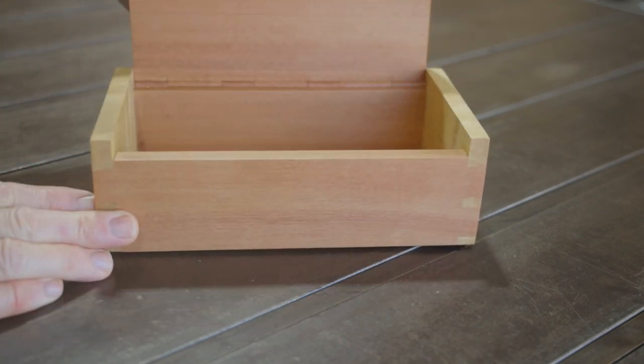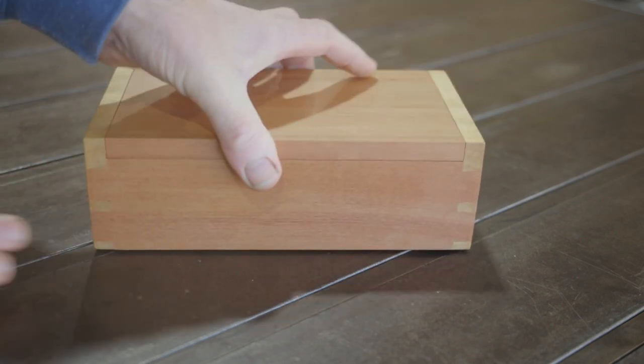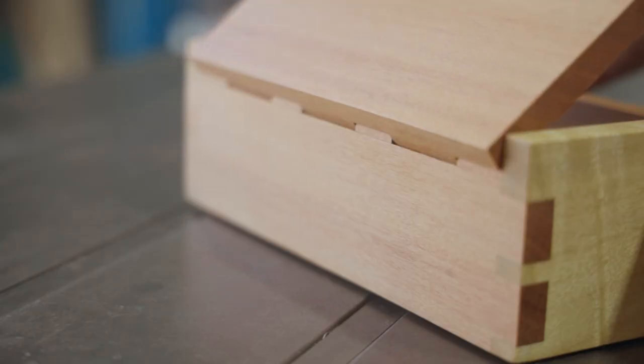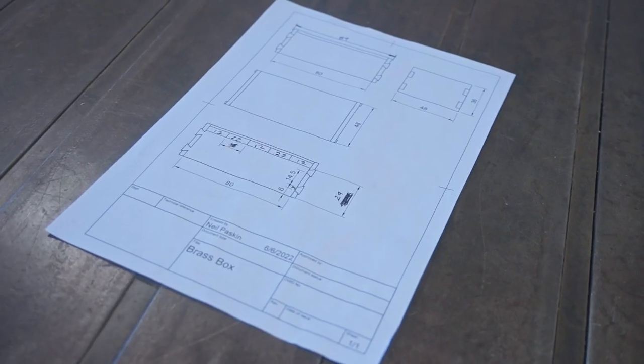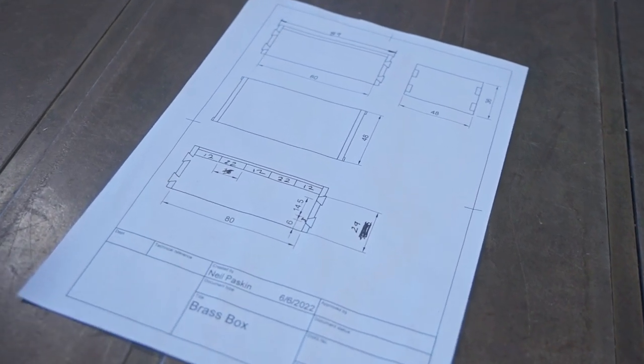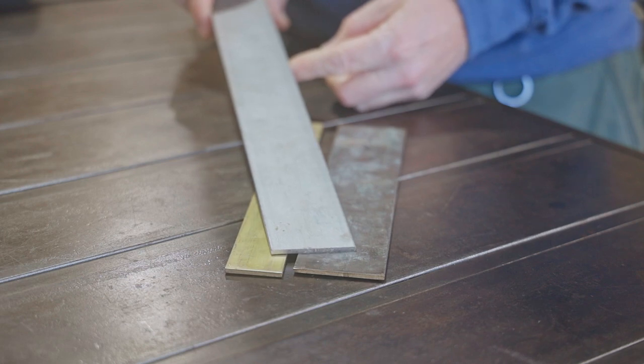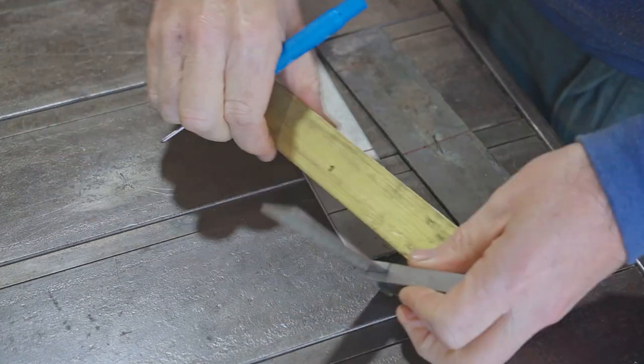Some of you may remember this wooden box that I made a while ago. It has a hidden hinge and since I made it I've been thinking about remaking it but out of brass. I've worked out the dimensions and as well as using brass I'll also use some stainless steel for the ends of the box and that will give the joints that hold it together more contrast.